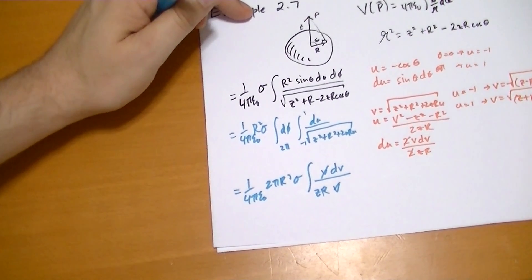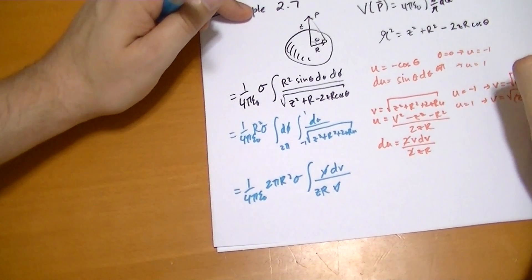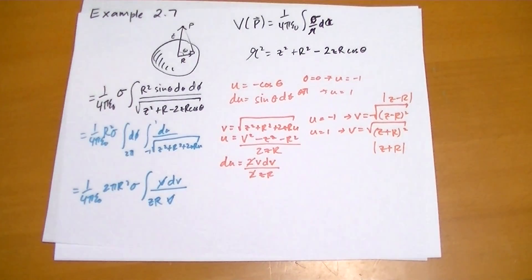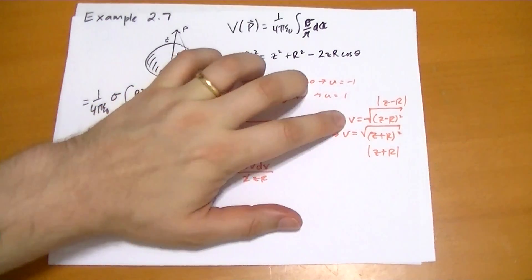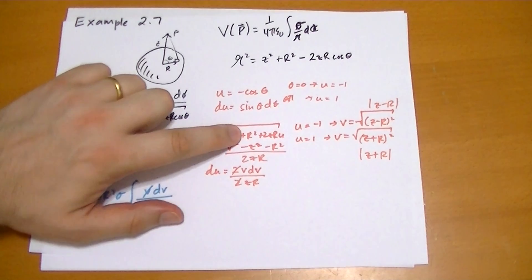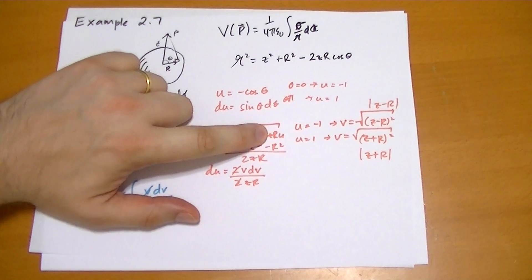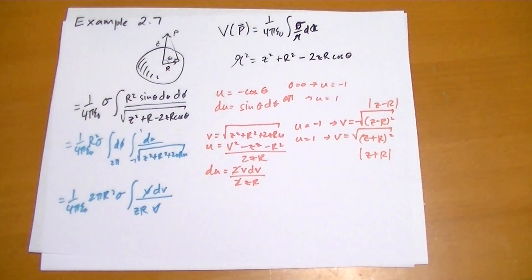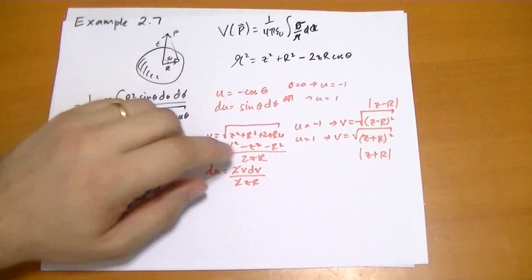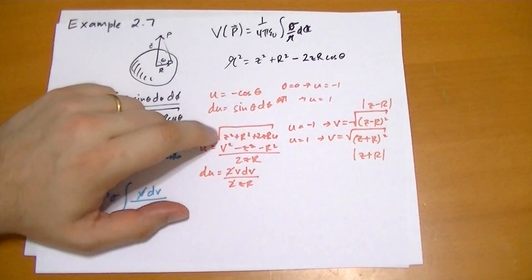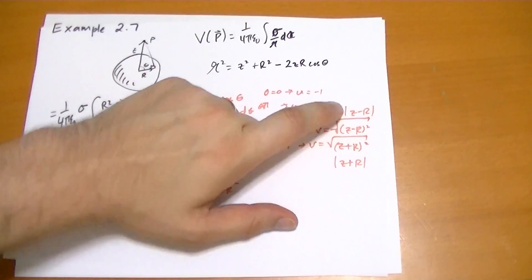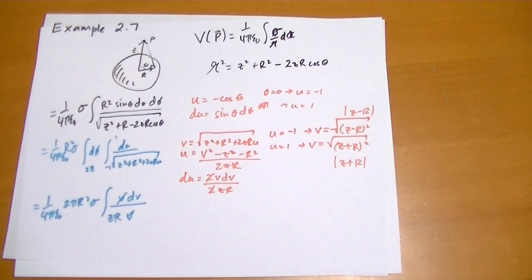And if you remember, the square root of a square is the absolute value. So we get the absolute value of z minus r and the absolute value of z plus r. Let me walk through that one more time. When u is negative 1, v is equal to z squared plus r squared minus 2 z r. And z squared plus r squared minus 2 z r is just z minus r squared. And on the other hand, when u is 1, then we get z squared plus r squared plus 2 z r, and that becomes z plus r squared. And the square root of the square is always equal to the absolute value.